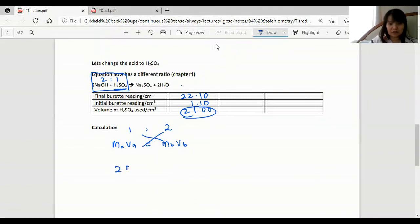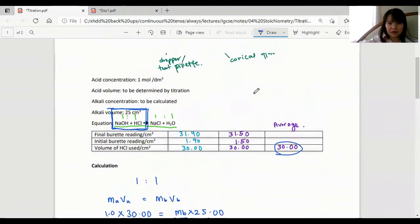So 2 times the mole of acid equals to the mole of base. This is how we'll do our calculation. Let's say every other detail here is the same.